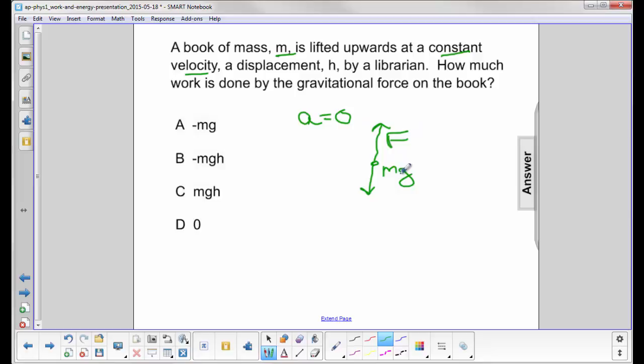Since a is zero, then f will just wind up equaling mg. But we're not interested in f this time, just mg. So the work done will be the force exerted by gravity, which is mg, and the displacement is h.